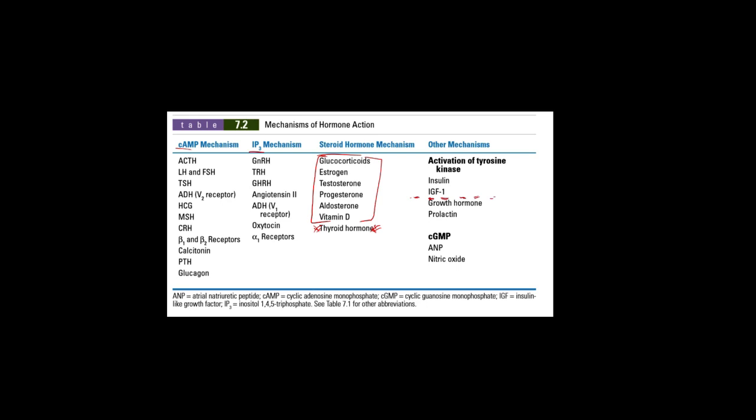Over here I put a little dashed line here because insulin and IGF act on a receptor tyrosine kinase, which is a receptor that can phosphorylate itself to activate the cell signaling pathway. And then growth hormone and prolactin act via binding a receptor that is associated to a tyrosine kinase. And then the cyclic GMP mechanism: ANP, nitric oxide. Don't get too overwhelmed with this.